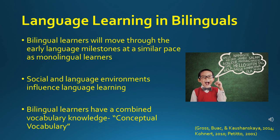Many assume that children who are bilingual are more likely to have language delays. This assumption may have arisen from the fact that it is common for children to know fewer words in each language compared to monolingual children when you examine each language individually. But expecting a bilingual child to show the same vocabulary knowledge as a monolingual child in each language is not realistic, because bilingual children generally show distributed vocabulary knowledge — the child may know a word only in one language, and other words only in the other language. However, the combined amount of words produced from both languages equals that of the monolingual child. This is called conceptual vocabulary.